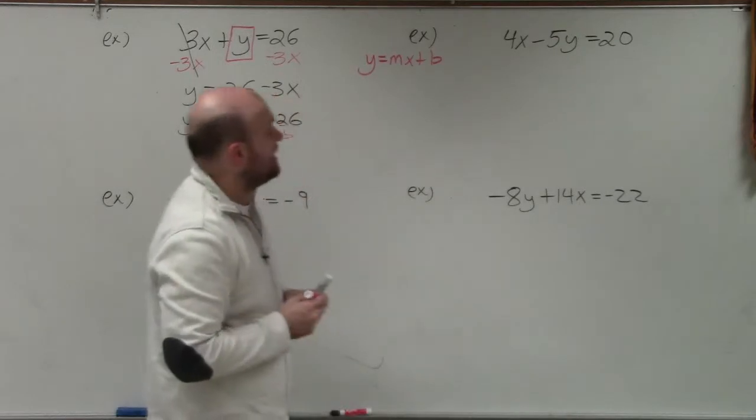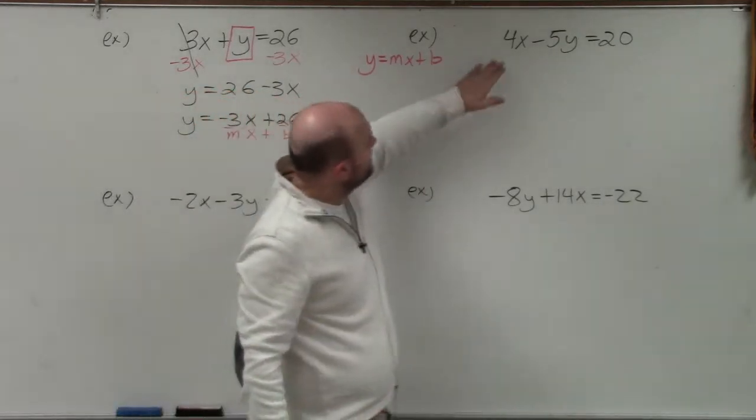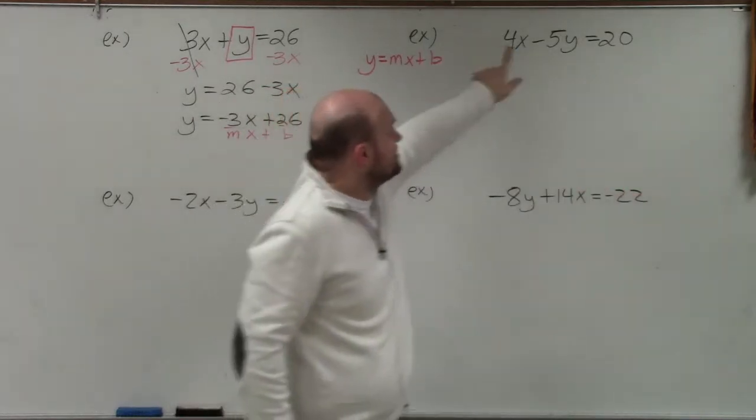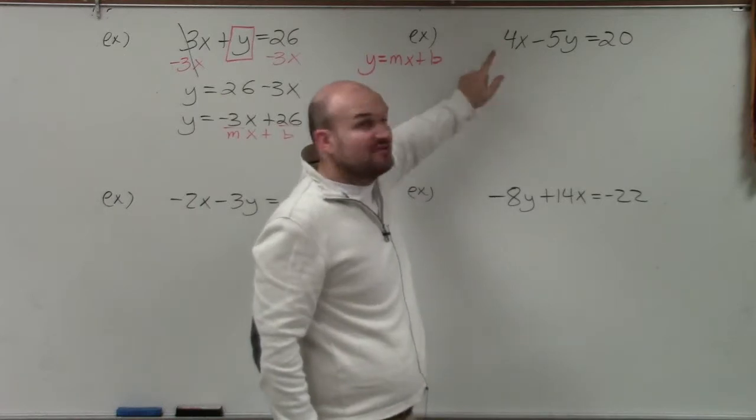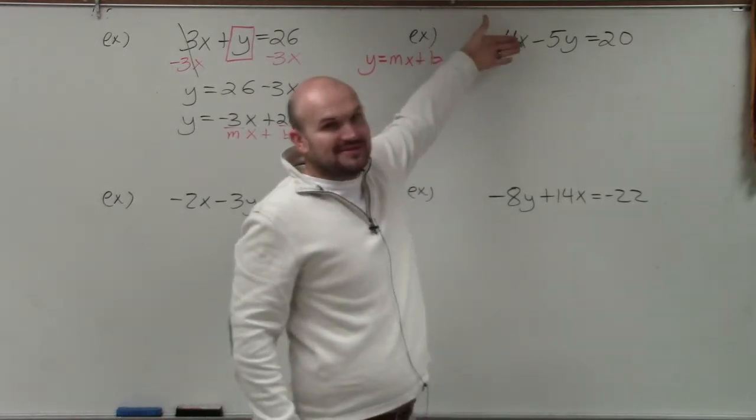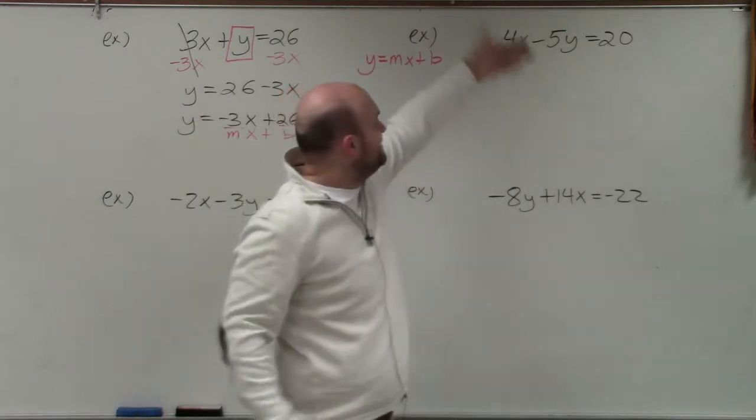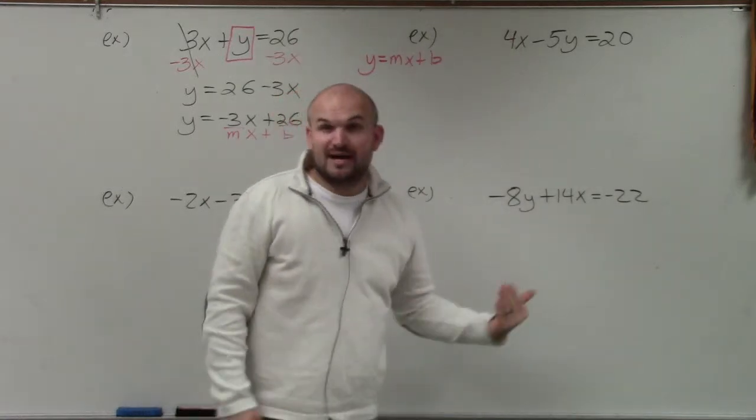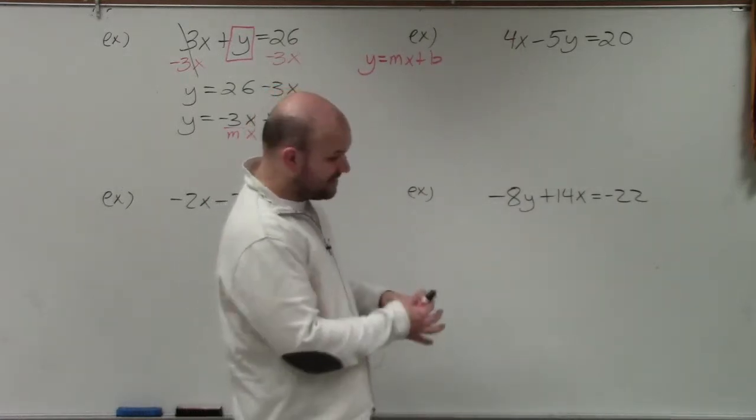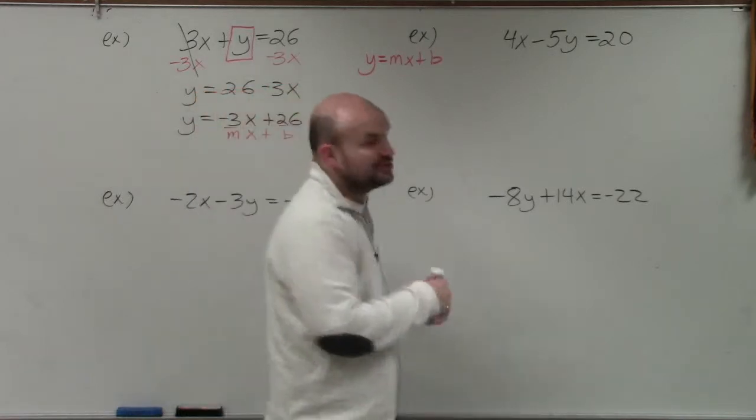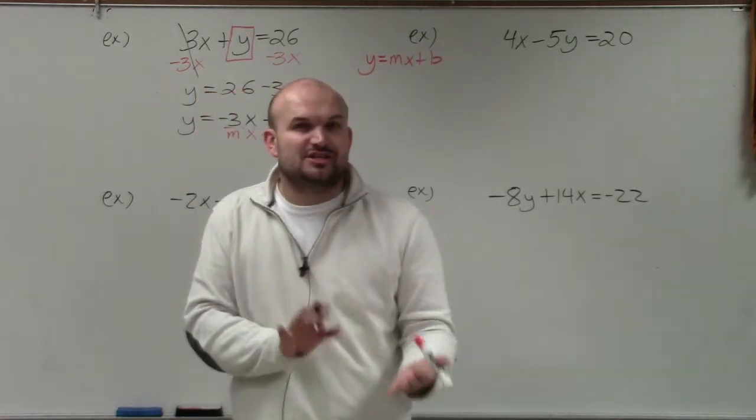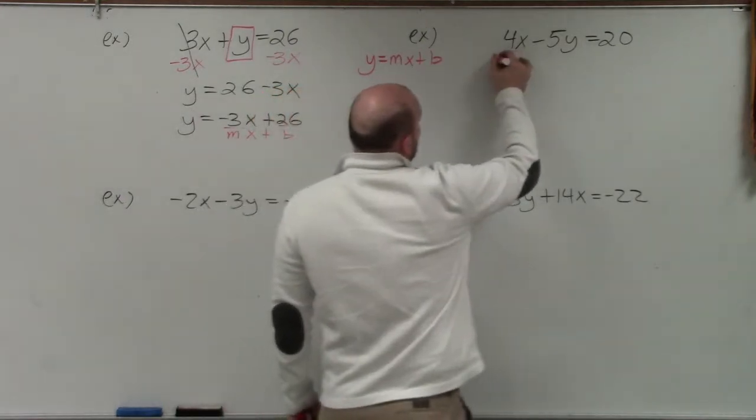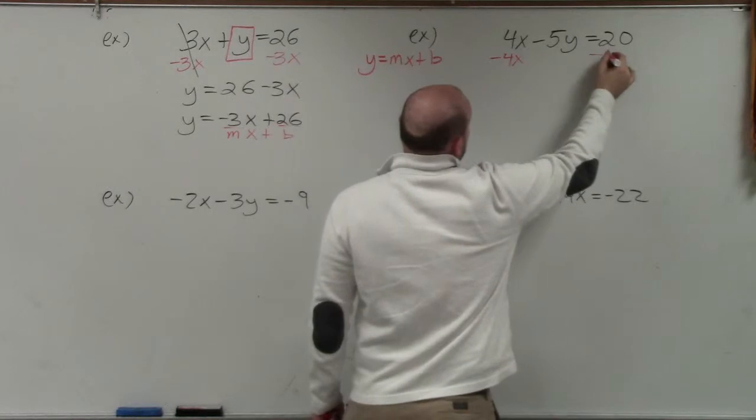Now in the next example, not only do I have a y that's being added by a 4x, because remember, it's not the subtraction sign, it's what's in front of your variable, what's in front of that term, which is nothing. So therefore, it's going to be positive. If it was a subtraction sign or a negative sign, it's negative, so you're actually subtracting. Since there's nothing there, we can assume that it's adding to your y. Just like we did over here, we're going to want to undo adding our 4x. You always want to undo addition and subtraction first, then we undo multiplication and division.